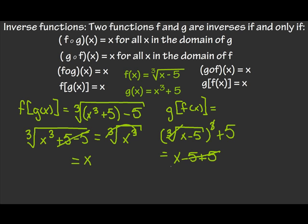Negative 5 plus 5 is 0, which leaves me with an x. So g of f of x also equals x. So since they both equal x, I just proved that f of x and g of x are, in fact, inverses of each other.